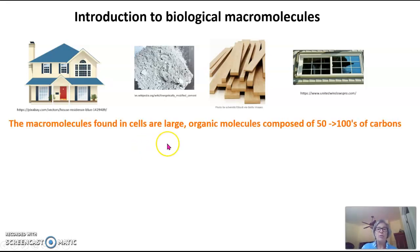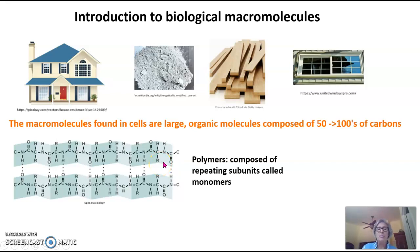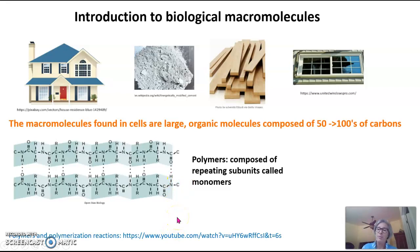These macromolecules are large organic molecules — organic meaning they are composed of carbon and have at least one carbon-hydrogen bond — and they're 50 to hundreds of carbons long. Three out of the four classes of macromolecules are polymers, and polymers are composed of repeating subunits called monomers. If you need a review of polymers, I encourage you to watch the polymers and polymerization video on this channel. The final category of macromolecule is not a polymer, but it is still considered a macromolecule because it's large — macro meaning large.